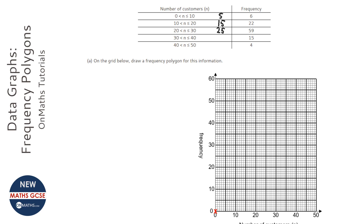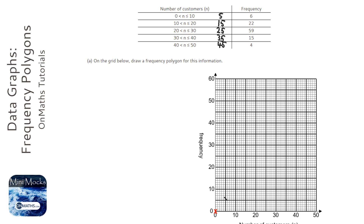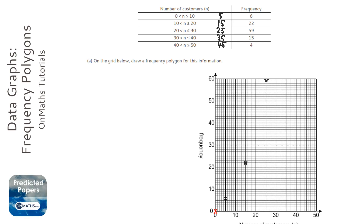The midpoints are 5, 15, 25, 35, and 45. So the first point is at 5 with a frequency of 6. The next is 15 at 22, so that would be about there. Then 25 at 59, which is right up here. Then 35 at 15, a little bit lower, and 45 at 4.